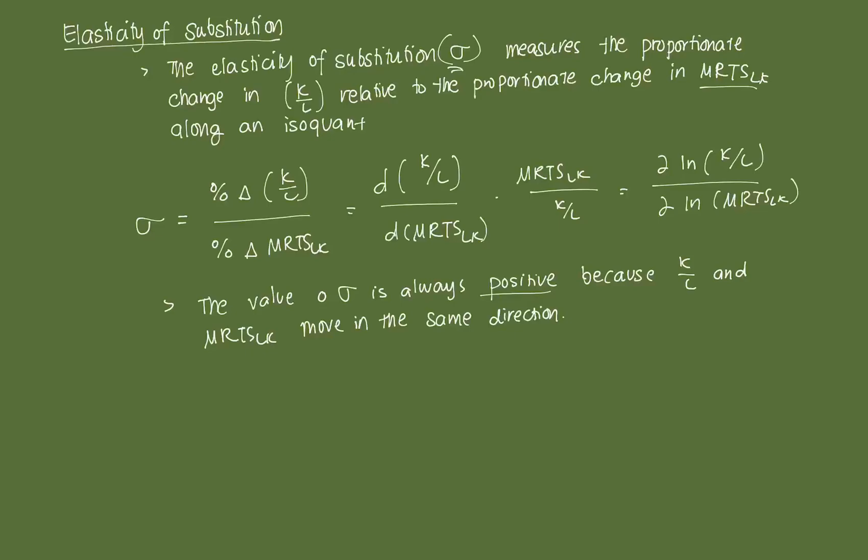So sigma, which is the elasticity of substitution, is computed as the percent change in the capital-labor ratio divided by the percent change in the marginal rate of technical substitution. So assuming both of them change, that will yield the elasticity of substitution. And we can break this down by using derivatives. So that's basically the derivative of the capital-labor ratio with respect to MRTS. And we need to apply the chain rule. So we have to multiply MRTS_LK over K over L. And since we're dealing with percent, another way to look at it is if we can take the natural log and we can do this partial derivative here.